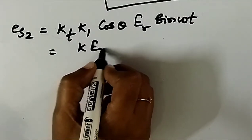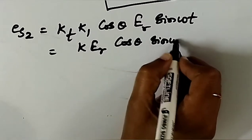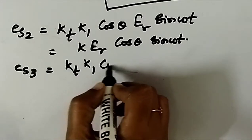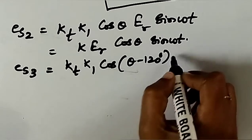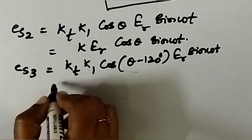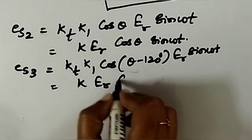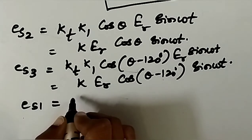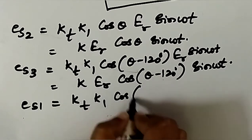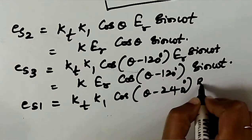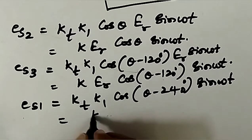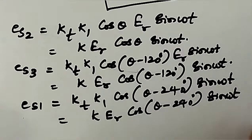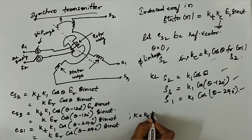ES3 = KT × K1 × cos(theta − 120°) × ER × sin(ωt) = K × ER × cos(theta − 120°) × sin(ωt). For ES1: KT × K1 × cos(theta − 240°) × ER × sin(ωt) = K × ER × cos(theta − 240°) × sin(ωt), where K = KT × K1.